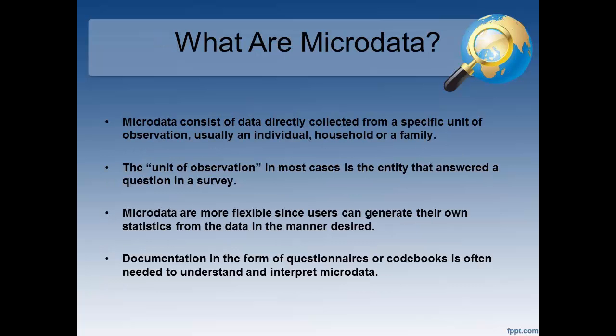So what are microdata? Microdata consists of data that are directly collected from a specific unit of observation, which is usually — and I want to hedge a little bit — perhaps not always, an individual, a householder, or a family. The unit of observation in most cases is the entity that answered a question in a survey. A lot of the time when people are looking for microdata, they're going to mention something more like surveys.